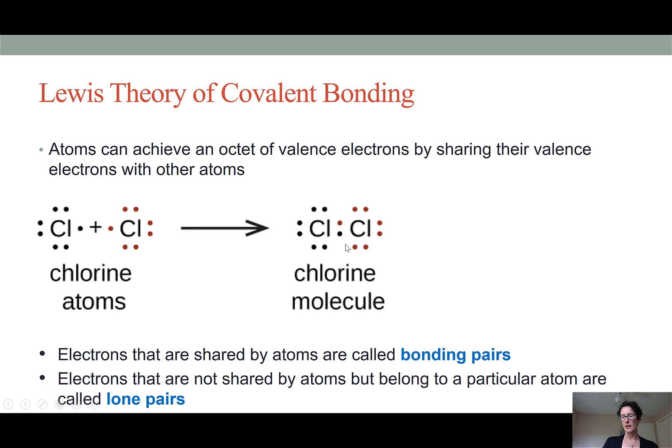We can depict bonding electrons by a solid line. Looking at this Lewis structure of the chlorine molecule we can apply the terms bonding pairs and lone pairs. A bonding pair of electrons is depicted as the line, so in a chlorine molecule we have one bonding pair and six different lone pairs of electrons.